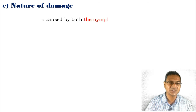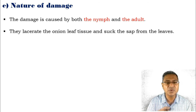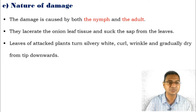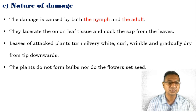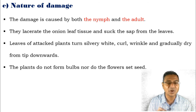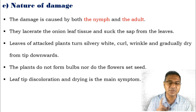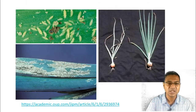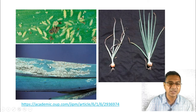The nature of damage is caused by both the nymphs and the adult. They lacerate the onion leaf tissues with their mouthparts and suck the sap from the leaves. The leaves of infested plants turn silvery white, curl, wrinkle, and gradually dry from the tip downwards. After infestation, plants do not form bulbs, nor do the flowers set seeds. Leaf discoloration and drying is the main symptom of infestation by this pest. Images shown here demonstrate the infestation caused by this pest, with growing parts completely dried, and a white pattern showing infestation carried by the pest.